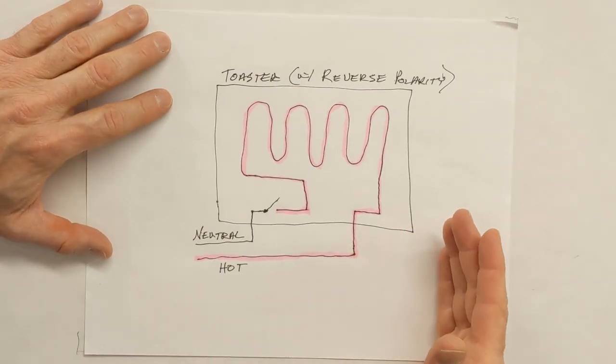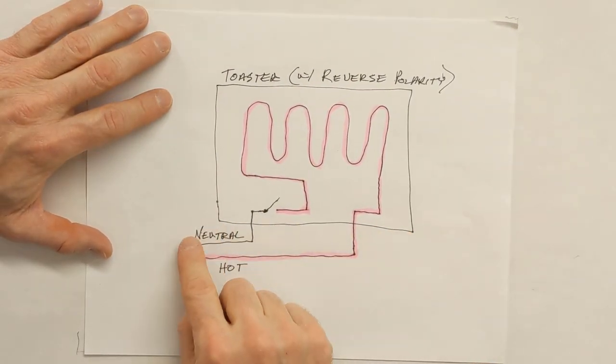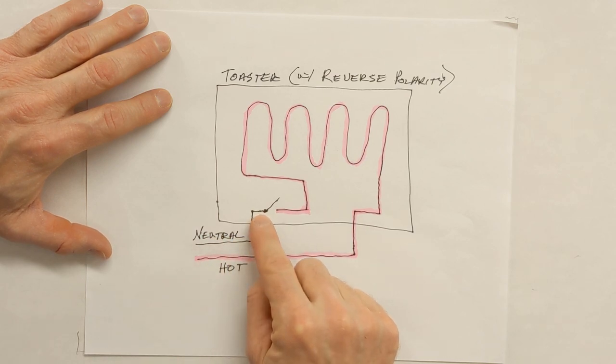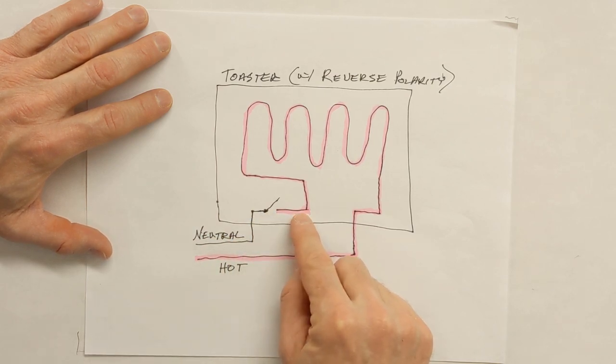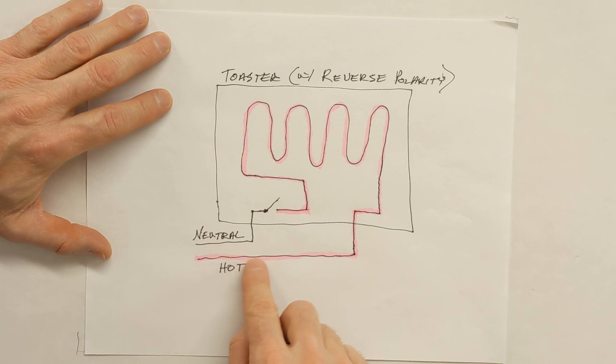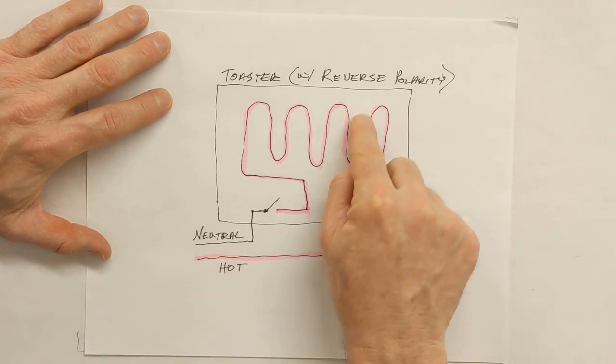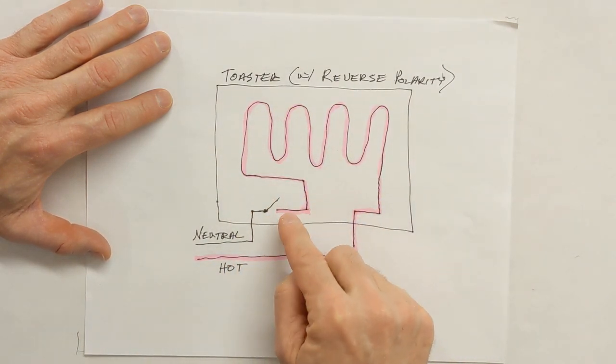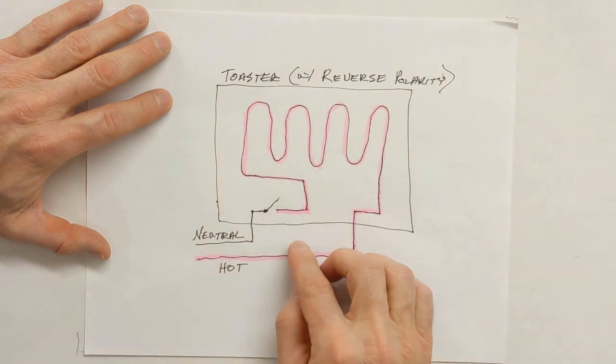Now, if you design the toaster so that the switch is on the neutral wire as it passes into the toaster, all the components in the toaster are hot all the time. That's because the hot is unswitched and it's got electrical pressure on everything inside the toaster.